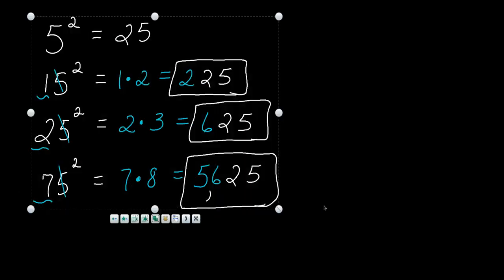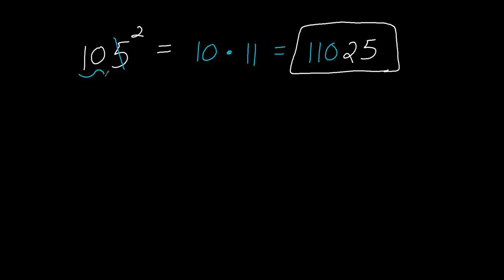Let's look at one more that has 3 digits in it. Let's say we want to square, how about 105? So 105 squared. Same process. Just ignore this 5 and bring the 10 over here. And what number comes after 10? 11. Multiply the 10 and the 11 together and that gives you 110. And then tack a 25 onto the end. In other words, 105 squared equals 11,025.